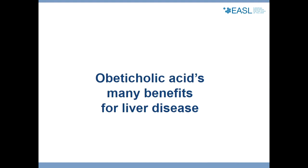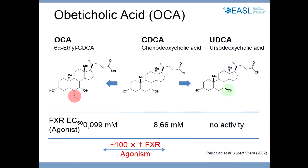For the second part of the presentation, we return to a molecule — obeticholic acid — and highlight many potential benefits for liver disease. Obeticholic acid is a bile acid. One of your major bile acids is chenodeoxycholic acid, a product of cholesterol — the root bile acid. On the right you see ursodeoxycholic acid, which is widely used for the treatment of liver diseases and is the main bile acid of the bear.